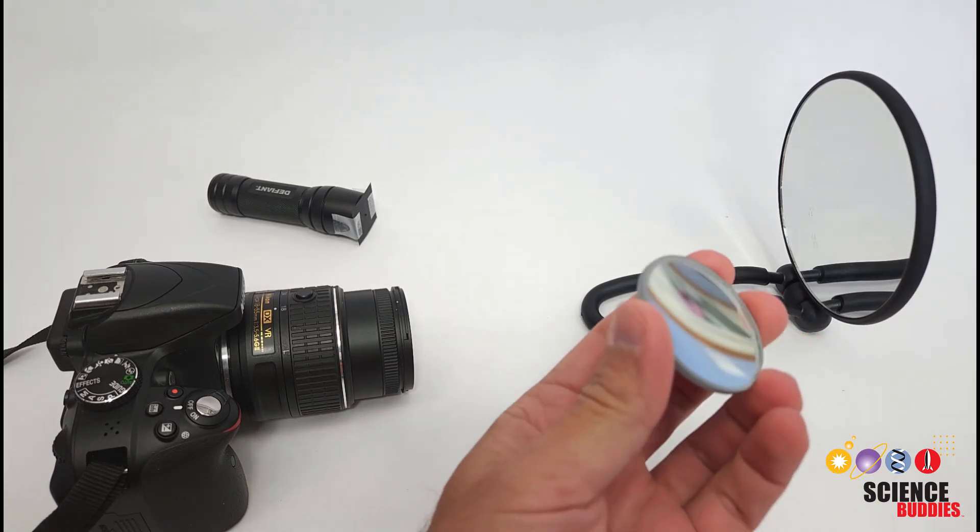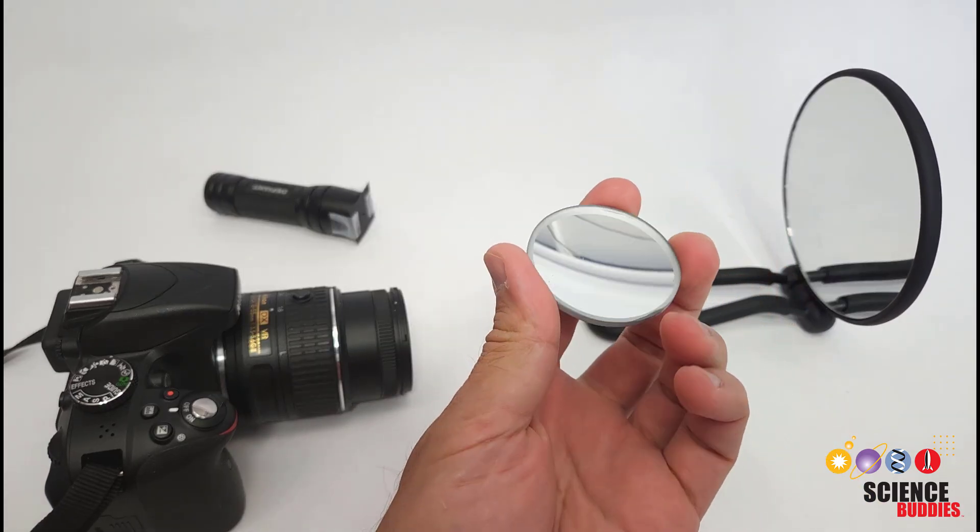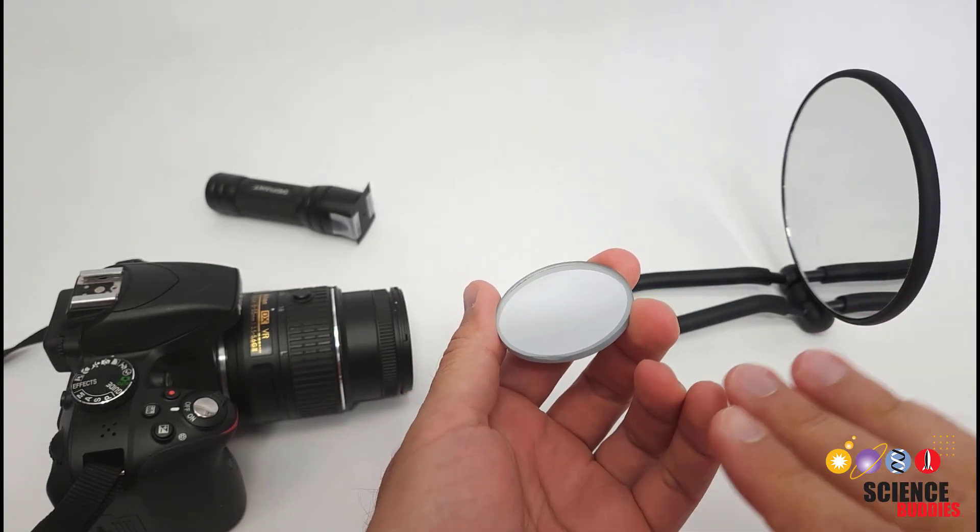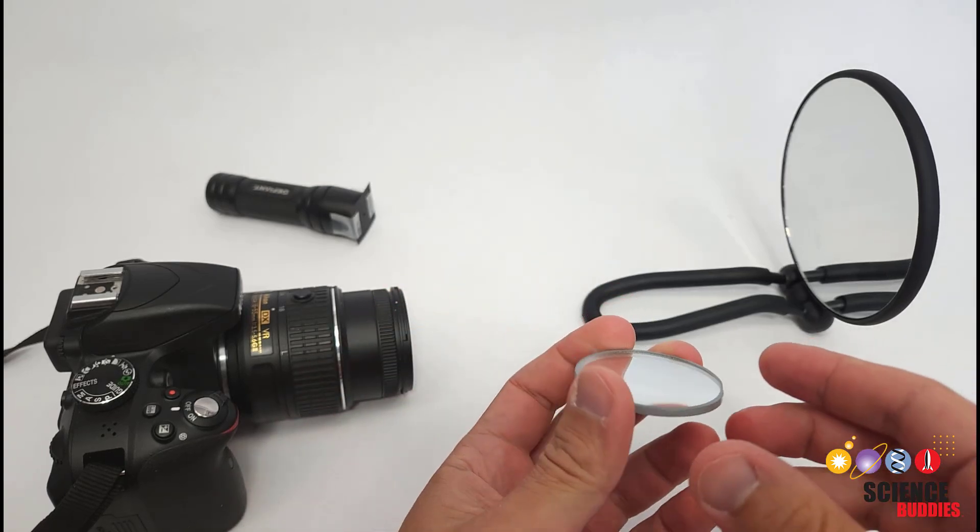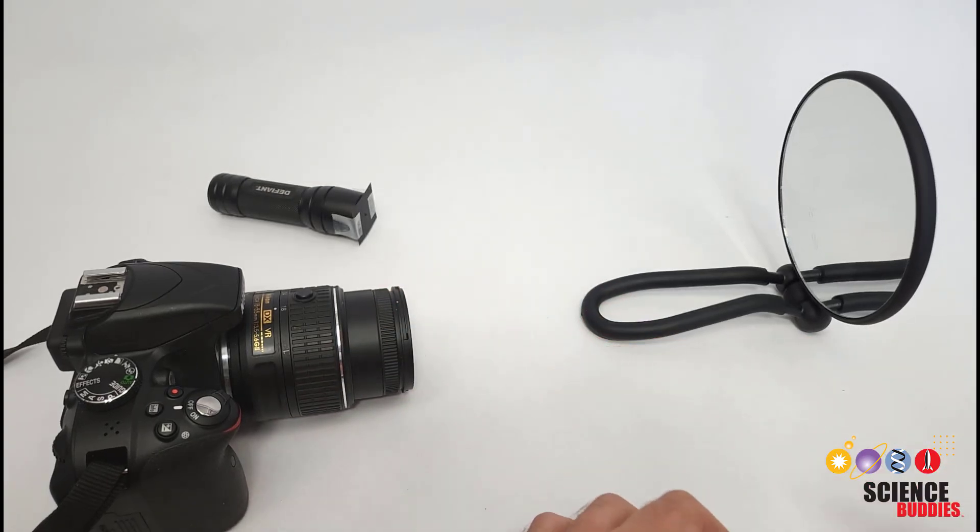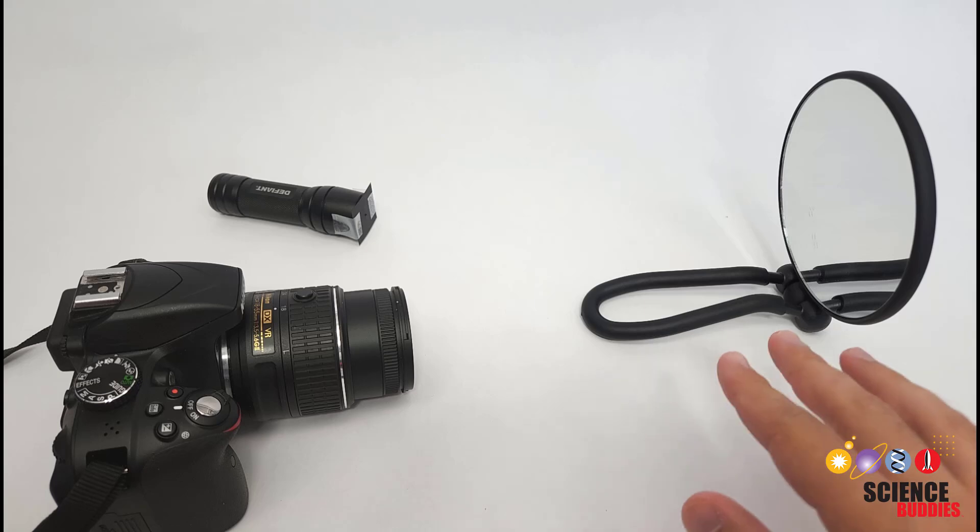You can buy a variety of laboratory-grade mirrors online that have a higher-quality, more accurately spherical surface, and you can buy much larger ones, but they do get very expensive. So if you're just looking to start out with an experiment and try to get this working, I recommend starting out with a cheap mirror and working your way up.